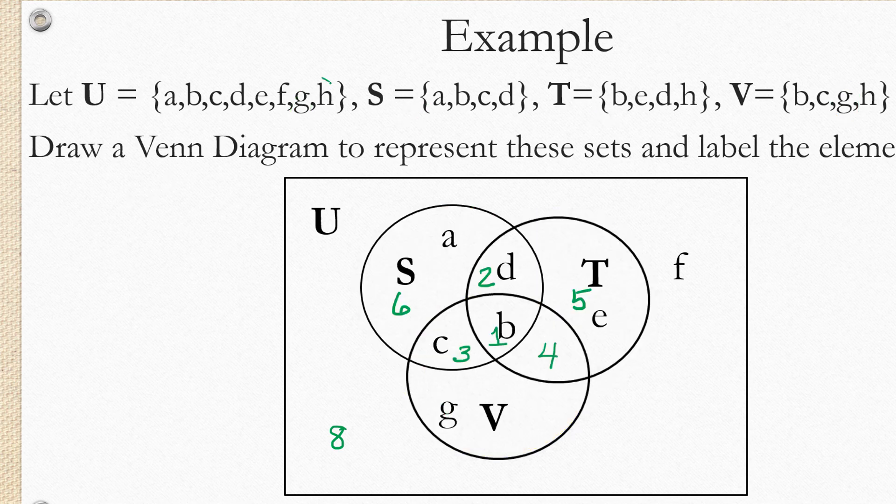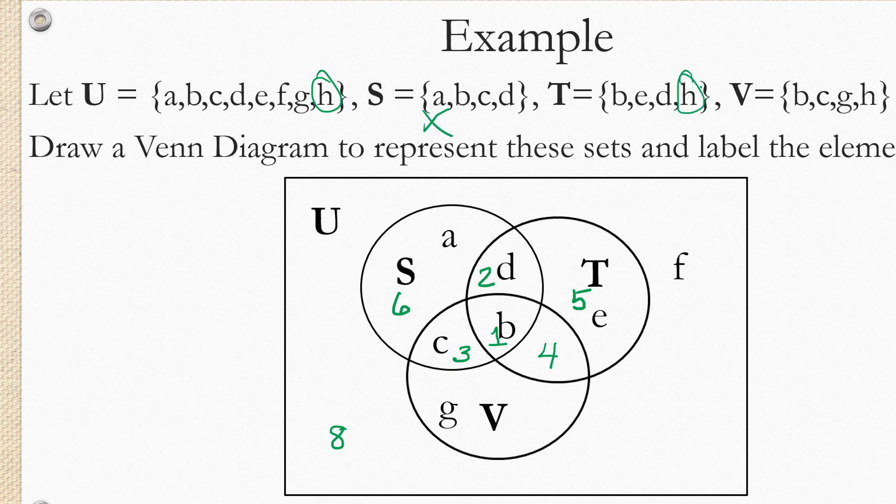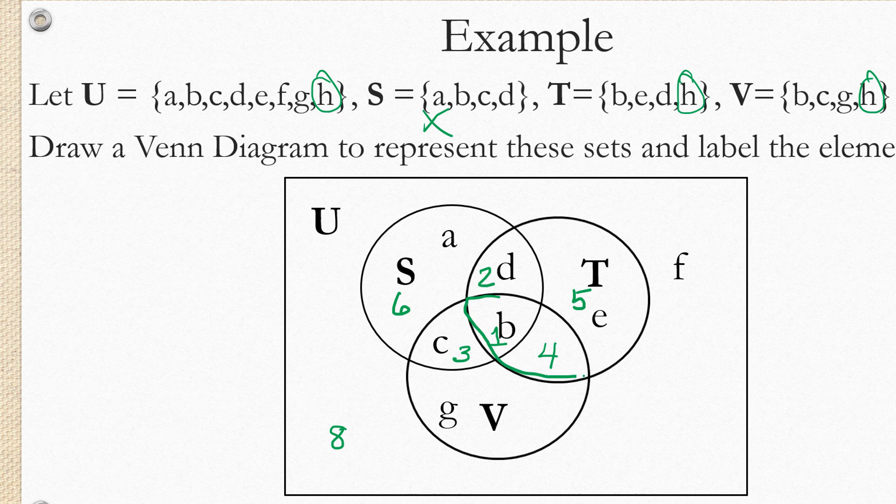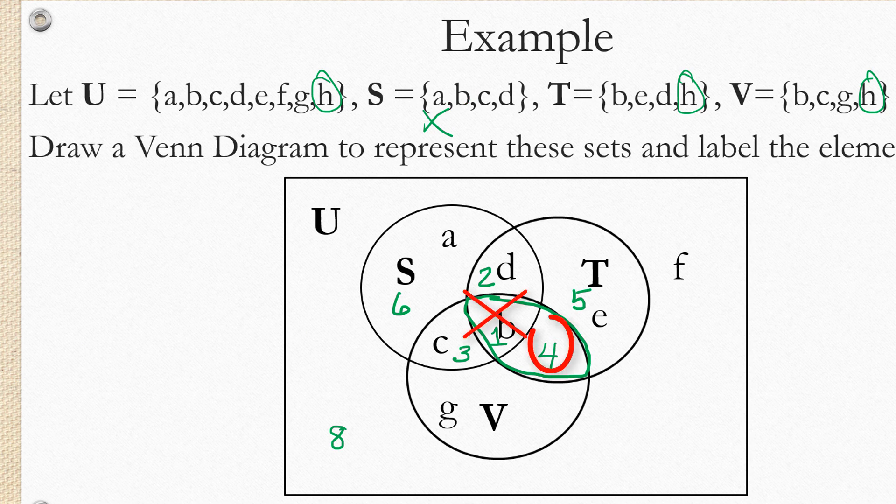And last but not least, the element H. H is not in S, but it is in T and it is in V. So we need to have the element H be in both T and V, which means their intersection, which is this football shaped piece here. But we also know that it can't be in S. So that excludes region one. So that means that H has to be in region four.